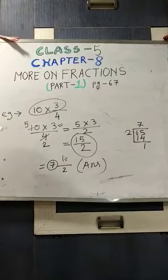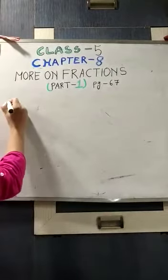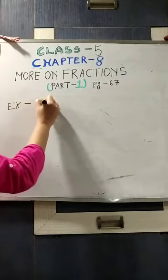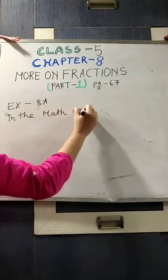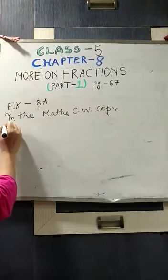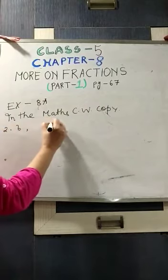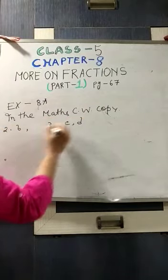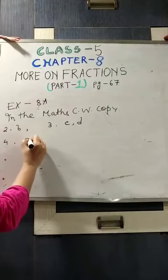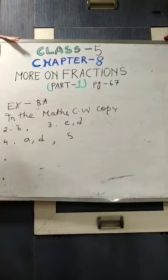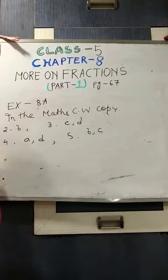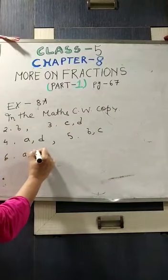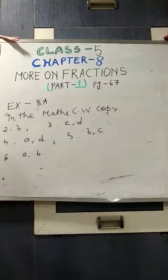Now, Exercise 8A in the maths classwork copy: 2D, 3C and D, 4A and D, 5B and C, 6A and B. These are the sums that you will have to do in your maths classwork copy.